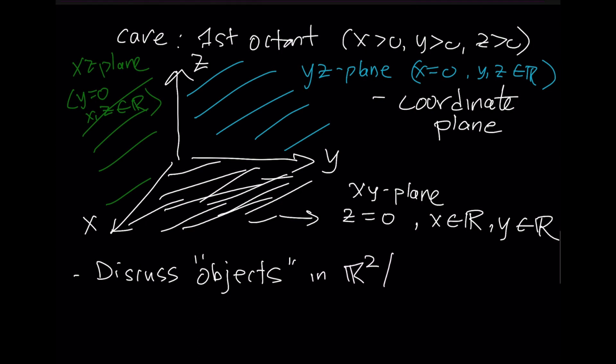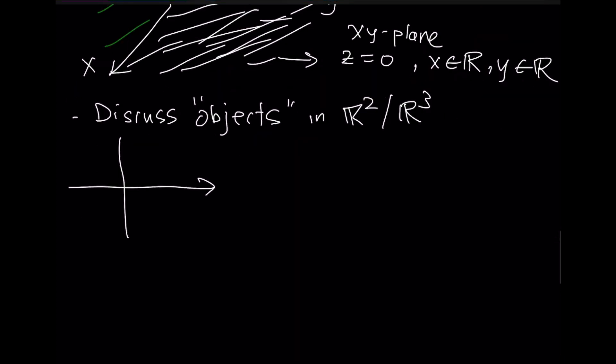We're going to discuss objects in R2 and R3. I'm not going to spend too much time in R2 discussing these objects because that's something you've probably seen a whole lot before. So if we focus on R2 like this, if we have an equation that has our two letters, x and y, we're going to call this a curve.